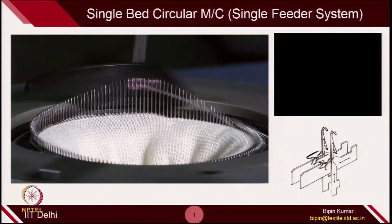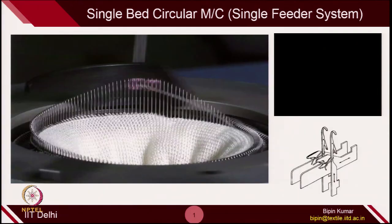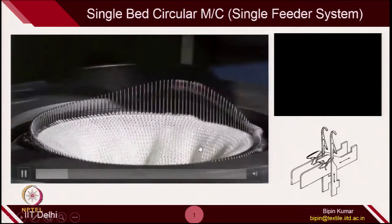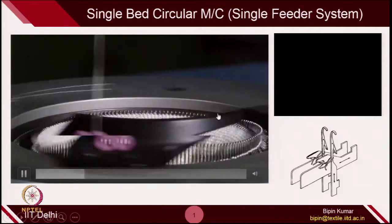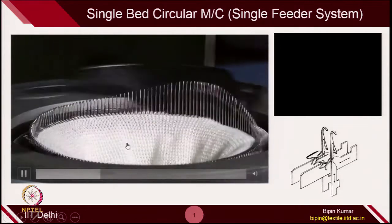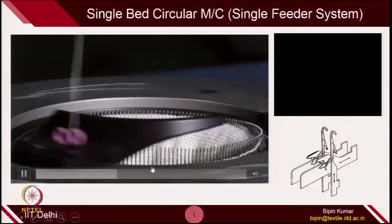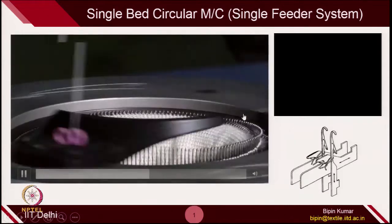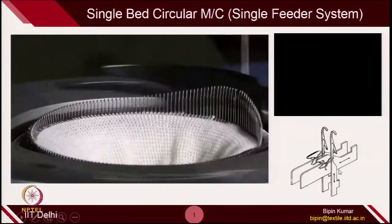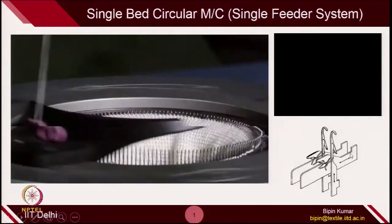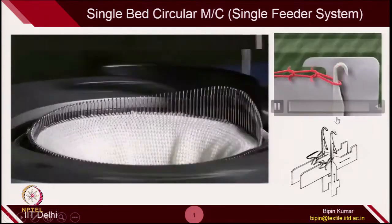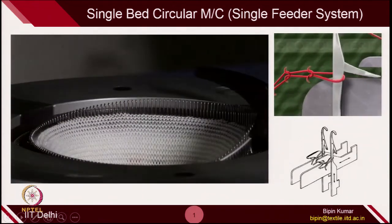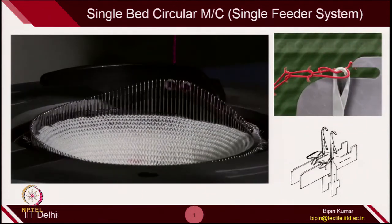Just a quick recap. I hope you remember this video showing how this particular single bed circular machine utilizes the yarn and creates fabric with the help of knitting action. In these particular machines, we have also seen how the sinker helps in loop formation — in holding, releasing, and making the loop.